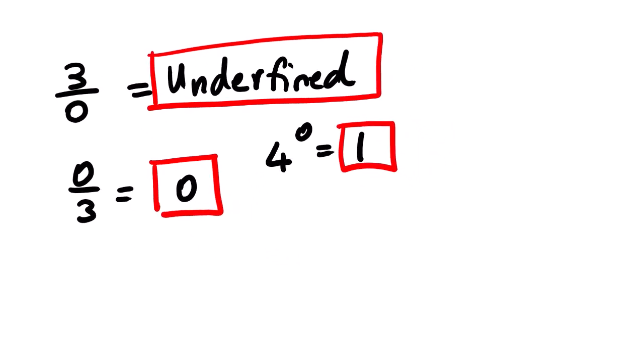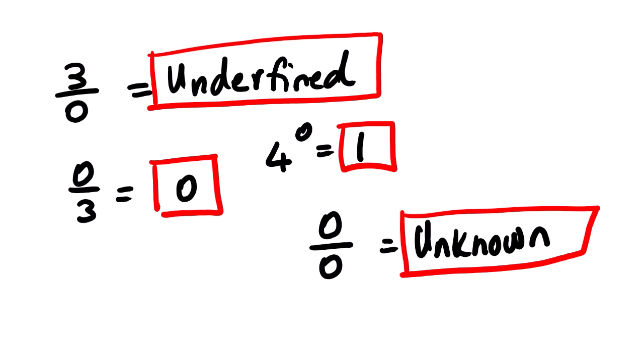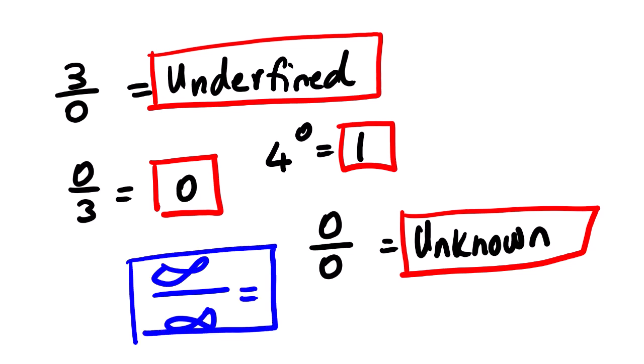Now suppose we use direct substitution on finding limits and we get 0 divided by 0. This one is unknown — we don't actually know what 0 divided by 0 is. It is not undefined and it is not 0, so it is unknown. Similarly, infinity divided by infinity is also unknown. Whenever we get these particular answers while dealing with limits, that is where we use L'Hôpital's Rule to find the limit of that function.